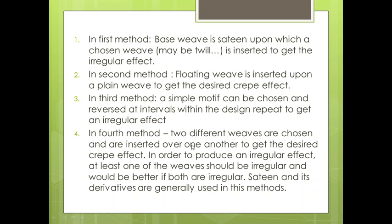In the fourth method, two different weaves are chosen and inserted over one another to get the desired crepe effect. It would be better if at least one of the weaves is irregular. Using both weaves in an irregular pattern and combining them will enhance the irregularity in the fabric. Satin and its derivatives are generally used in this method.